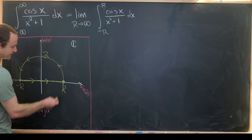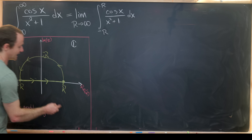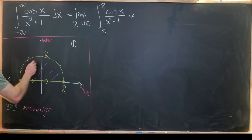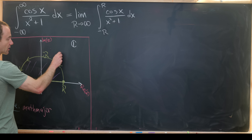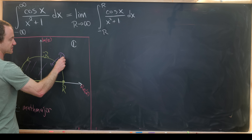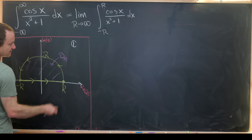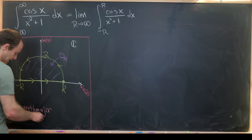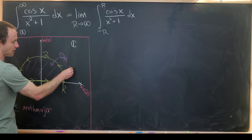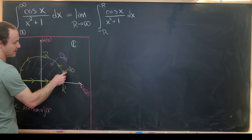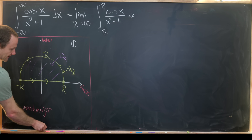We'll call the region bounded by this semicircle D_R, and the yellow curve — the boundary of D_R — is denoted boundary of D_R.